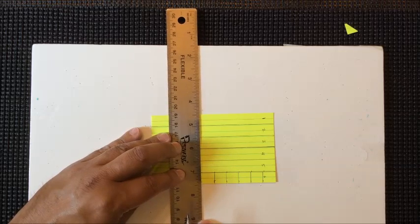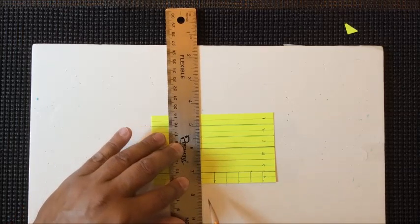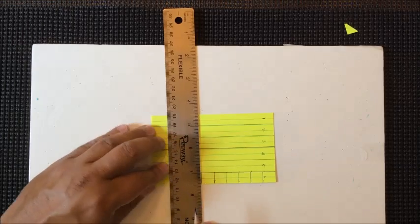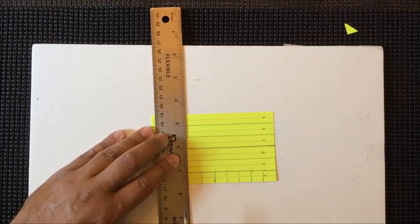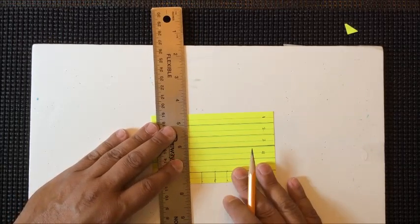Notice before I draw my lines, I secure the ruler down with my hand, my opposite hand I am writing with, that keeps the ruler from slipping and making a crooked line.